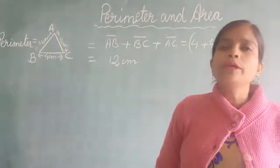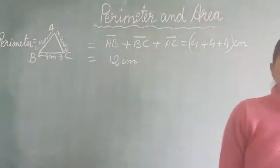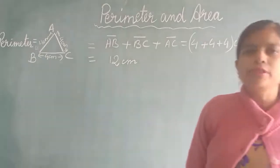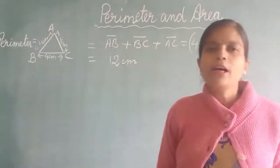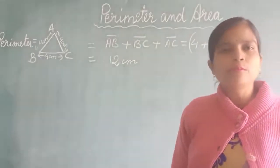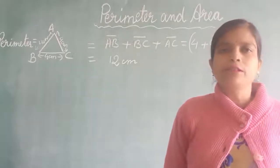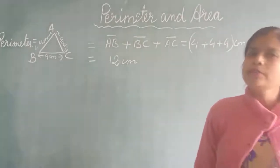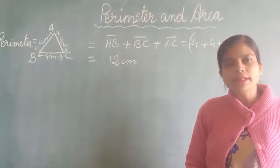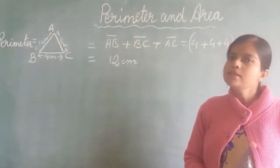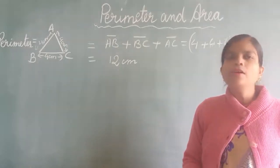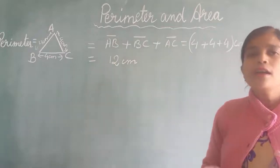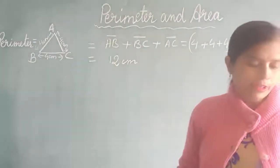Today, we are going to learn to find the perimeter of a composite figure. The rule is the same. We have to add the length of the boundary of the figure, because the length of the boundary of the figure is only known as perimeter. So whether it is a simple figure or composite figure, we have to add the length of the boundary of the figure.